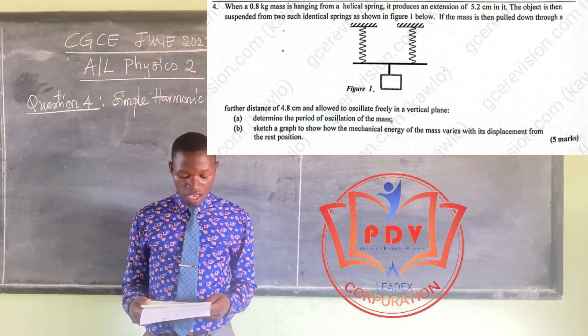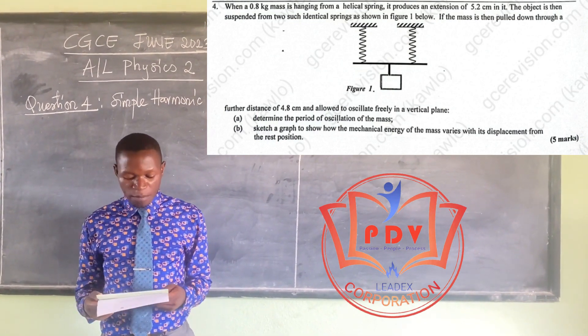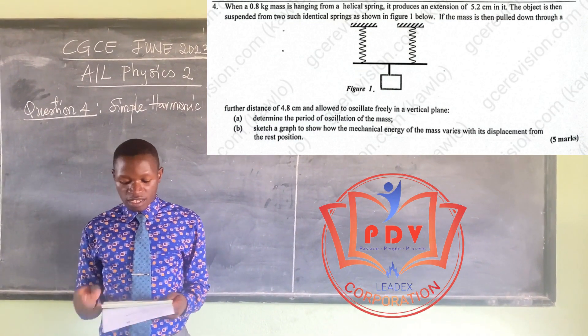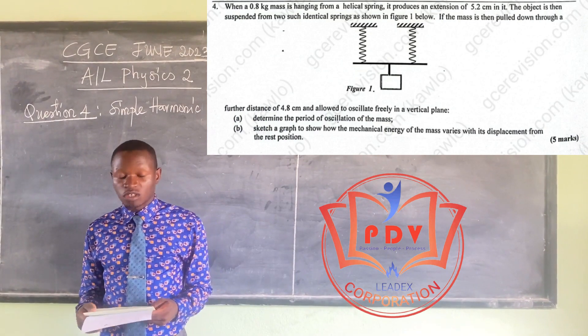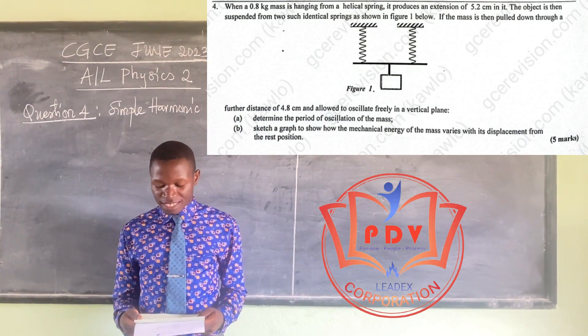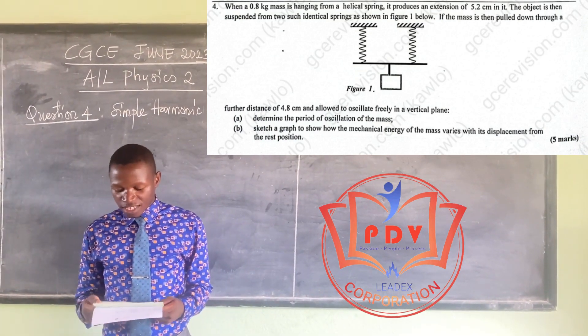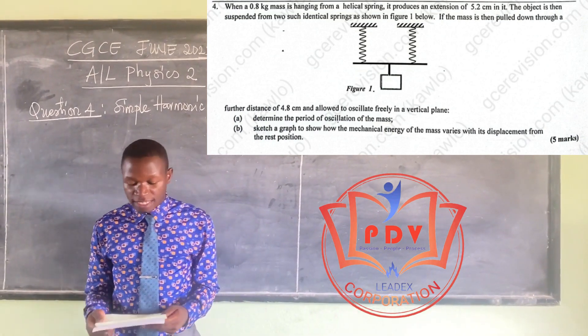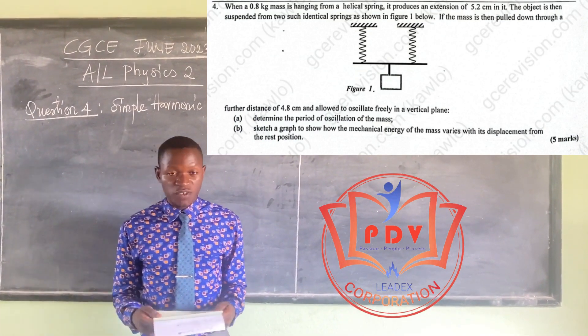As you can find on the screen, the question says when a 0.8 kg mass is hanging from a helical spring, it produces an extension of 5.2 cm in it. The object is then suspended from two such identical springs as shown in figure 1.